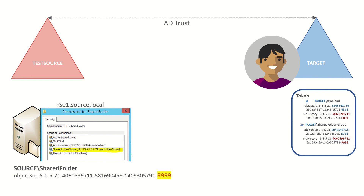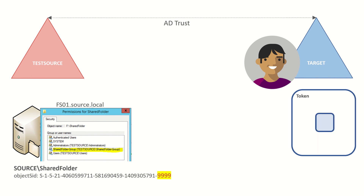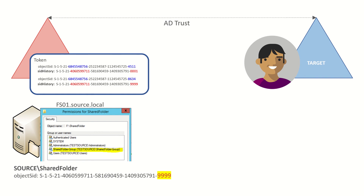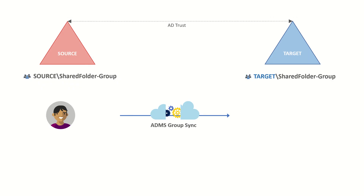When he wants to access his files on the server back in the source, he's going to present his access token to the server across the AD trust. The file server will examine the contents of his token and compare it against the permissions defined in the access control list. Because Derek has a match — which came from that group SID history attribute — Derek's target account is granted access.